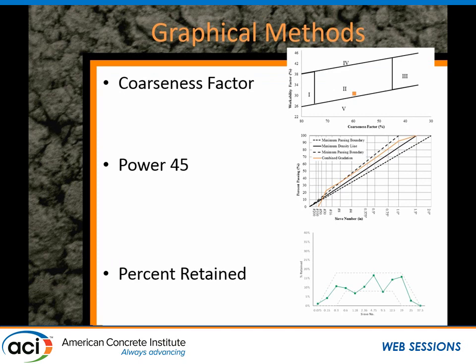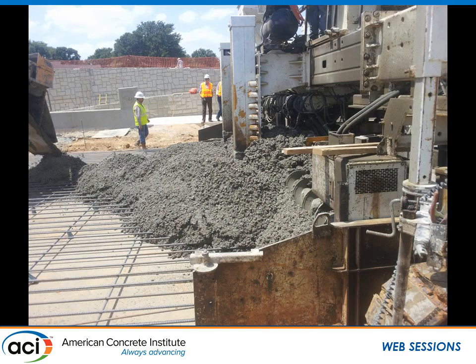Some might call these proportioning methods: the coarseness factor, the power 45, the percent retained. We're going to run all these together and see how they compare to one another. And we're going to be talking about slip form concrete pavements — that's what it's all about today.